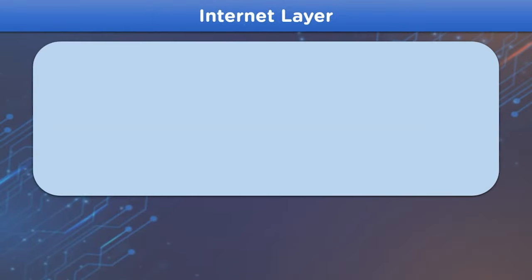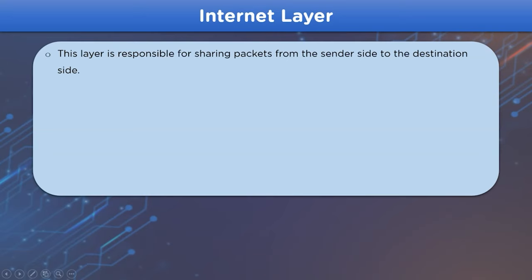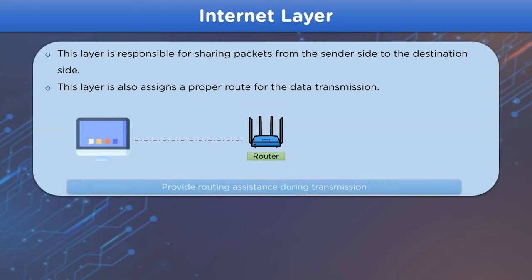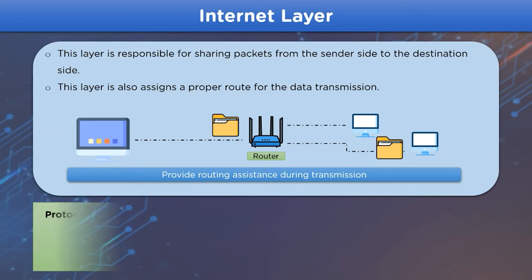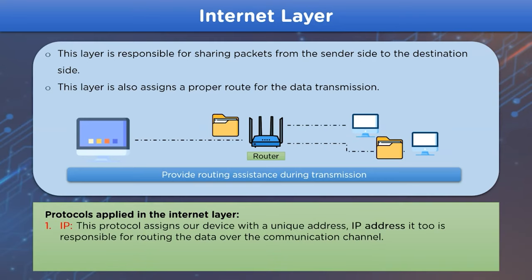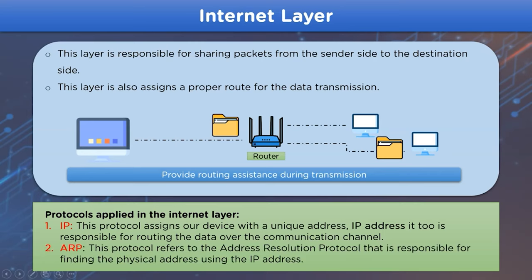The next layer is the internet layer. This layer is responsible for the transmission of data over the network channel, providing a proper route for packets to be transferred over the communication channel. The protocols applied by this layer are IP (Internet Protocol), which assigns a unique address to a physical system so it can be identified on the internet, and ARP (Address Resolution Protocol), which is used to find the physical address of a system using its IP address.